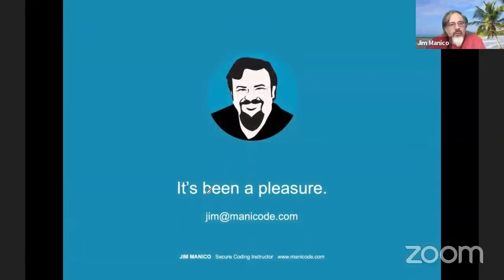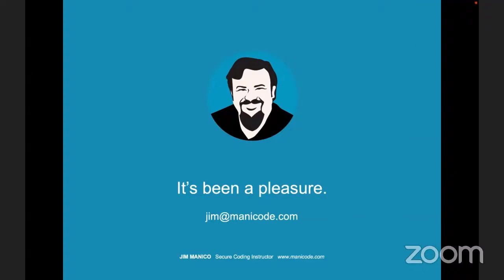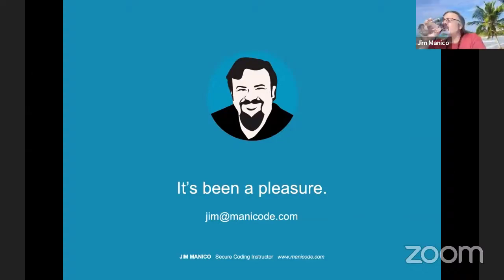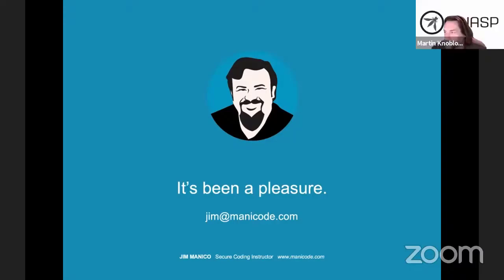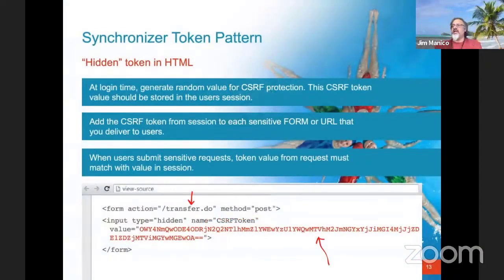That's my take on request forgery on the web and how to educate developers about it. Now to questions. On the synchronizer token pattern: yes, it's the same thing as what's built into most standard web frameworks. But please confirm — you don't just get it automatically, you often have to enable it or turn it on for certain features. It's usually available in your framework, but make sure you're enabling and configuring it properly. There's usually a guide in most frameworks showing how to do it.